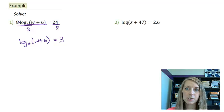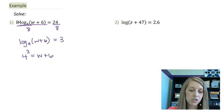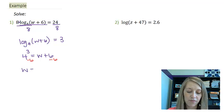Now converting it into exponential notation, this gives me 4 to the third power equals w plus 6. If I subtract 6 from both sides, that would isolate my w variable.